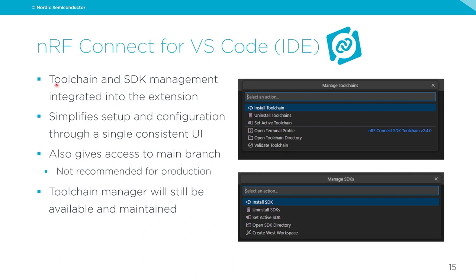We have integrated both toolchain and SDK management into the NRF Connect for VS Code extension. You can still use the Toolchain Manager, but having this in VS Code simplifies setup by giving you a single consistent interface — no switching between applications. One added benefit is that you can also download the main branch to stay updated with the latest developments, though we strongly recommend not using the main branch for production. The Toolchain Manager will continue to be available and maintained.